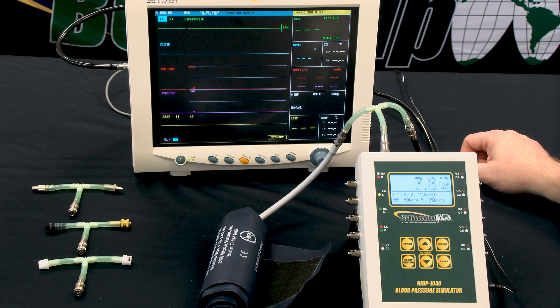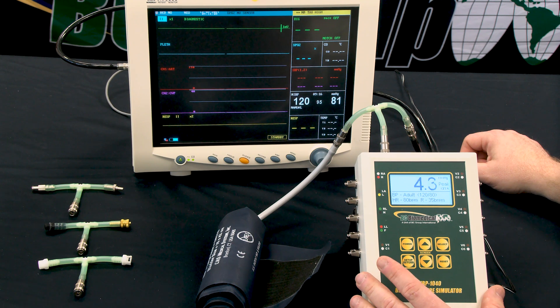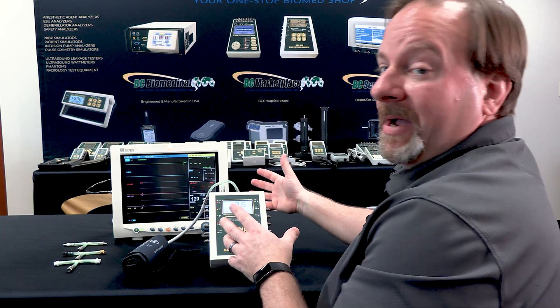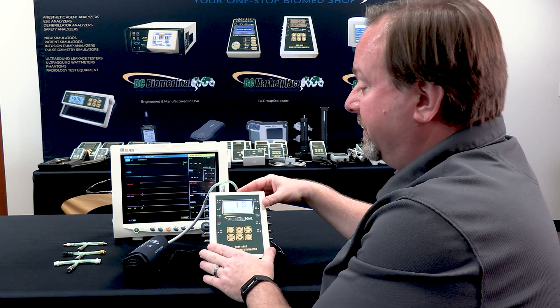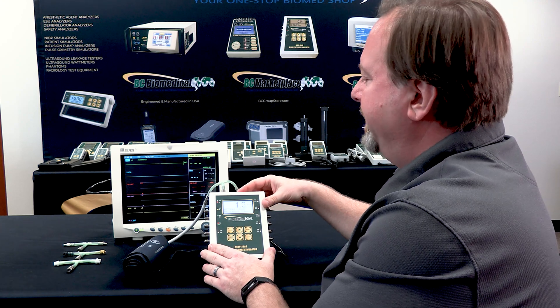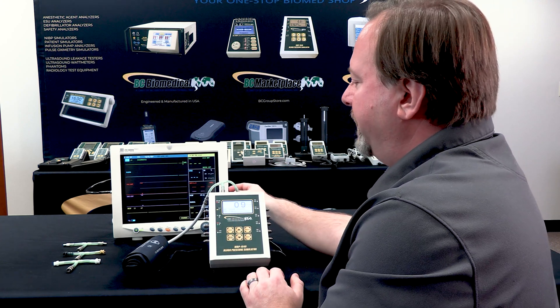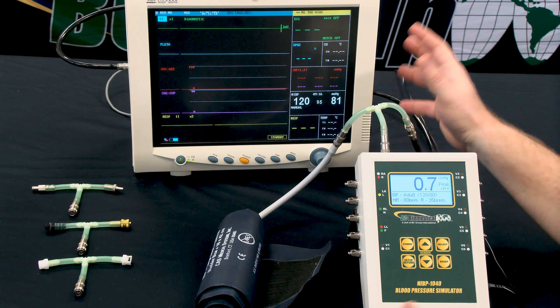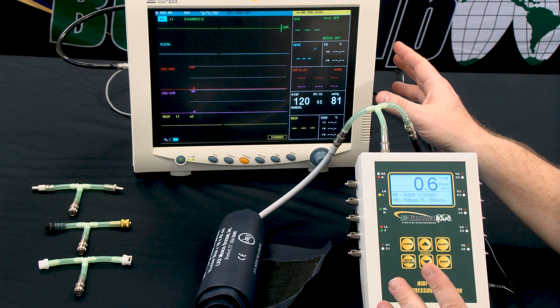There we go, 120 over 81. So in this case, different monitors may respond to our algorithm for simulating blood pressure. In this case, we got a reading of 120 over 81, which is pretty close to what we're expecting.